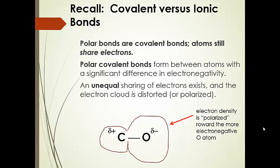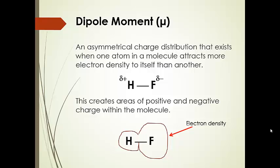Now, polar covalent bonds. This is still a covalent bond — electrons are shared — but now it's an unequal sharing. This results in a polarized electron cloud. For instance, oxygen is more electronegative, so it pulls electron density toward itself and away from the carbon in this particular bond. We call that polarized electron density — it's an unequal sharing, but they are still sharing. When we have an asymmetrical charge distribution or a polarized electron cloud around a molecule, we say that molecule has a dipole moment. These are areas of positive and negative charge within the molecule.